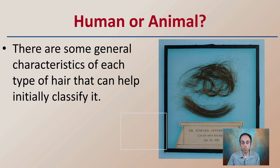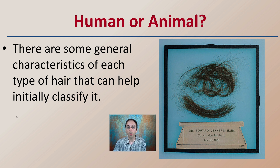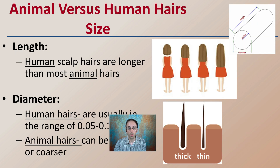First off, human or animal — there are some general characteristics of each type of hair that can help initially classify it as whether you're looking at a human hair or an animal hair. Because if you find something at the crime scene, even if there may have been humans involved, you want to be able to rule out or classify it as just human or animal in the general category.